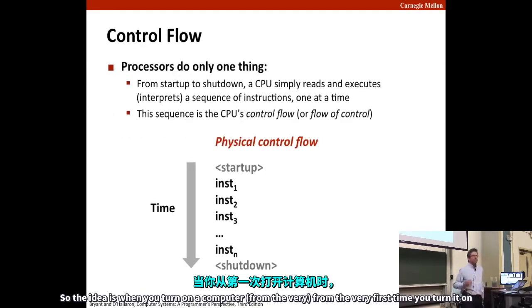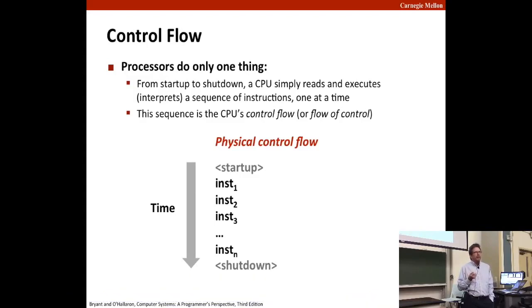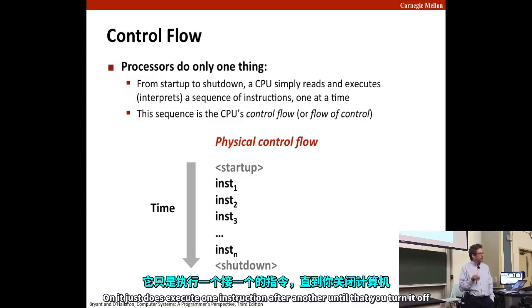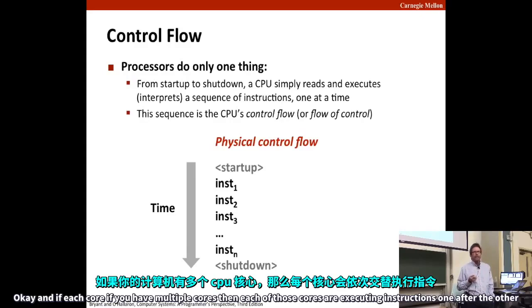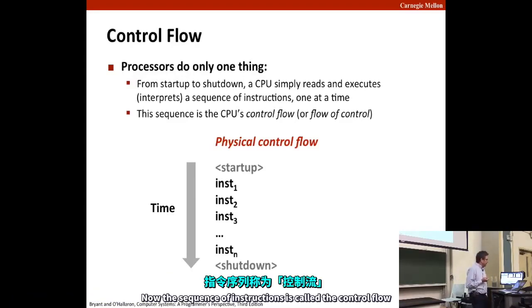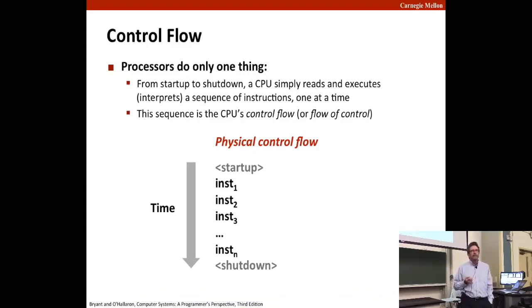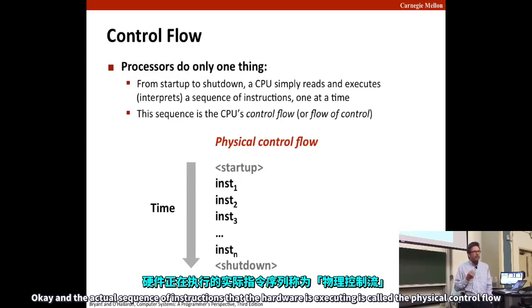When you turn on a computer from the very first time, it just executes one instruction after another until you turn it off. If you have multiple cores, then each of those cores is executing instructions one after the other. This sequence of instructions is called the control flow, and the actual sequence of instructions that the hardware is executing is called the physical control flow.